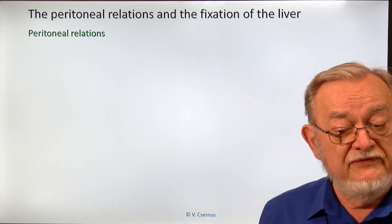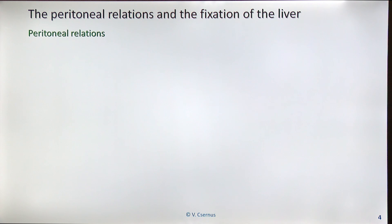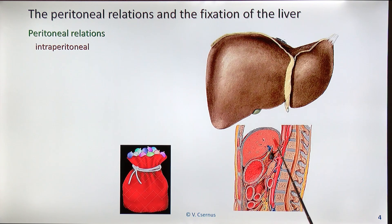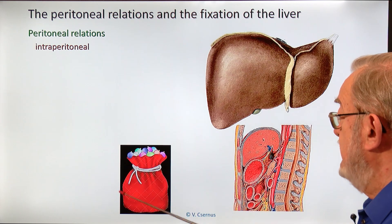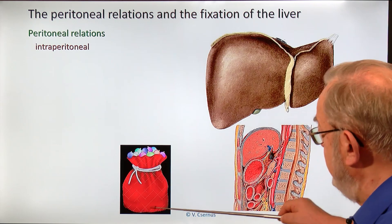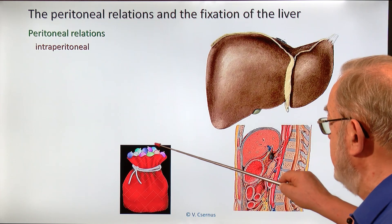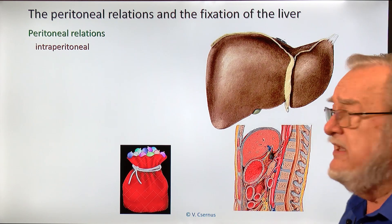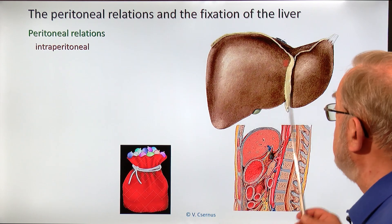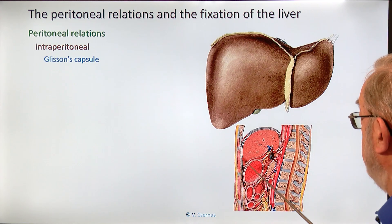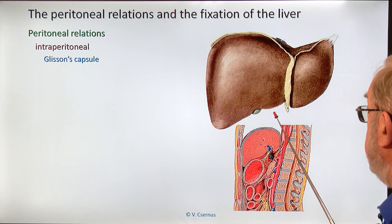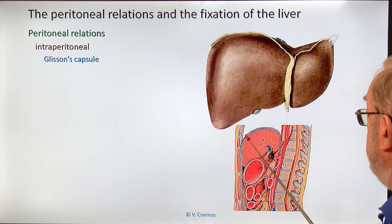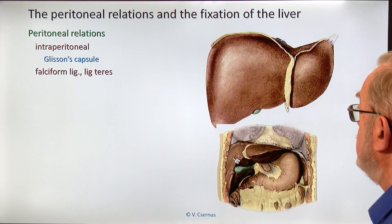What is the peritoneal relation? This is an important issue whenever we discuss any abdominal organ. The liver is clearly intraperitoneal — the entire liver is enveloped by peritoneum. Imagine a Santa Claus bag into which something is pushed and then ligated, with the upper surface slightly uneven — this is the principle of how the peritoneum is positioned relative to the liver. Along the liver surface we have the Glisson's capsule — a thin layer of dense collagenous connective tissue. On top of that, strictly adhered, is the visceral peritoneum.